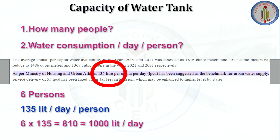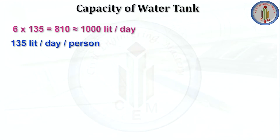If we multiply the number of people by the water consumption, we get the quantity. For six persons multiplied by 135 liters, we get 810 liters per day. Approximately we can take 1000 liters per day — so for six persons we require 1000 liters of water per day. This is how you find out the capacity.